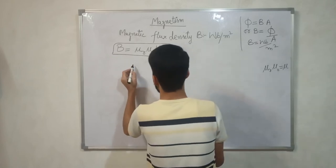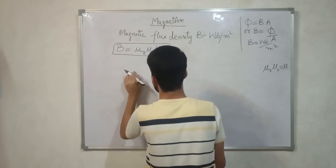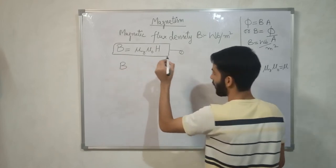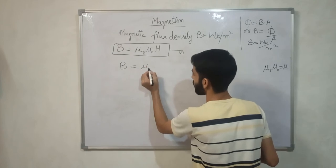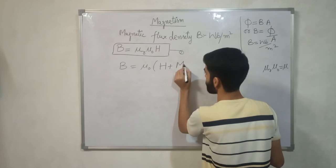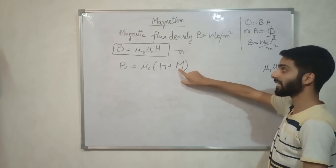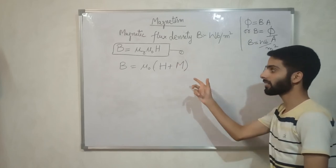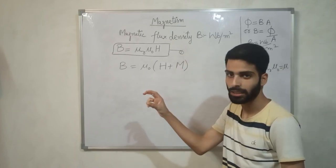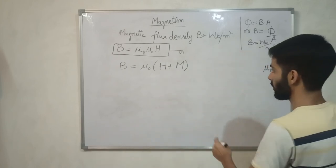Another formula for B is: B = μ₀(H + M), where M is magnetization — the extent of polarity that a magnetic field creates in a block of some material, as we have already discussed.